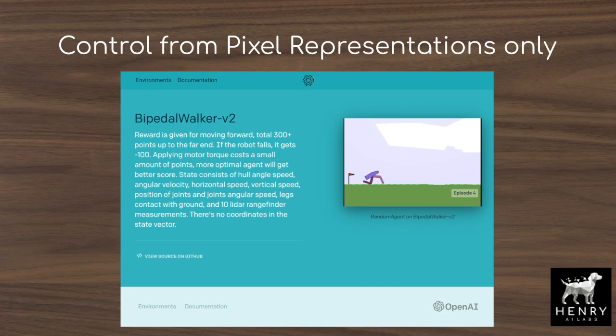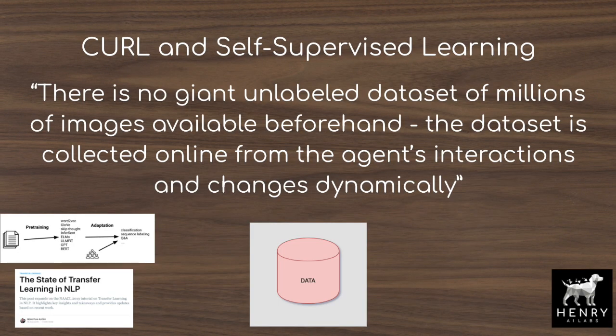CURL implements the Contrastive Learning Framework with the MoCo algorithm developed by researchers at Facebook AI. Adding the MoCo algorithm is a simple extension on top of reinforcement learning models such as Soft Actor Critic and Deep Q-Learning. This additional loss helps the mapping from high-dimensional stacks of the last-seen images into lower-dimensional representations for control tasks.